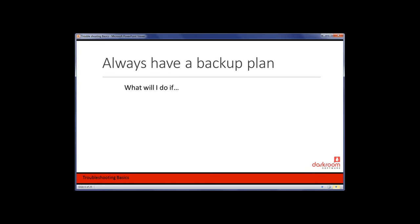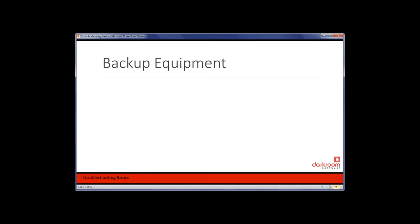Let's start with backup plans. What would you do if your printer jams, your camera dies, your computer crashes, or your lights fail? Photo booth is a complex setup with computers, software, cameras, and printers all working in conjunction. Anything in that chain can cause a problem. At Darkroom Software we strive to make the best software possible, but we're human and anything can fail. Problems can also appear to be caused by the software but actually stem from unrelated outside issues like cables and printers.